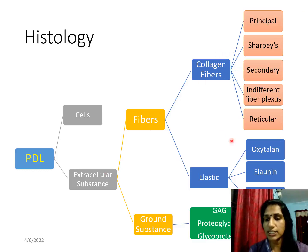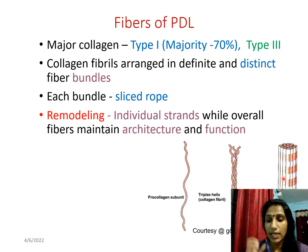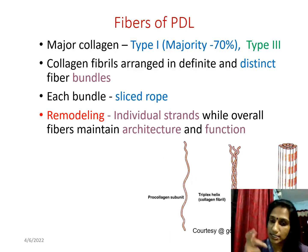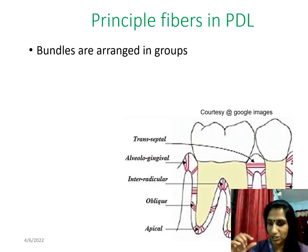The majority of fibers of the periodontal ligament are type 1 collagen fibers, followed by type 3. These collagen fibers are arranged in bundles — not as single strands. Each bundle is like a sliced rope, and when it undergoes remodeling it is the individual strands within the bundle that remodel, not the entire bundle. This allows the overall architecture and function to be maintained.